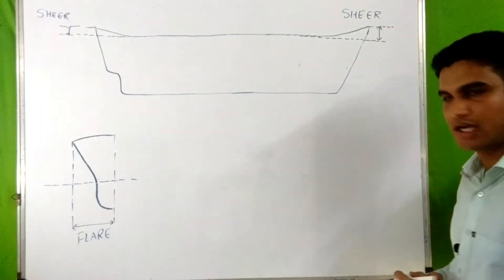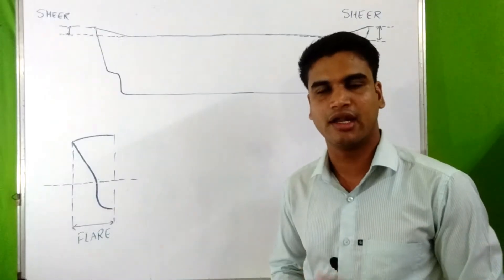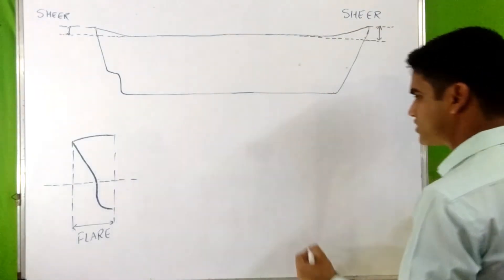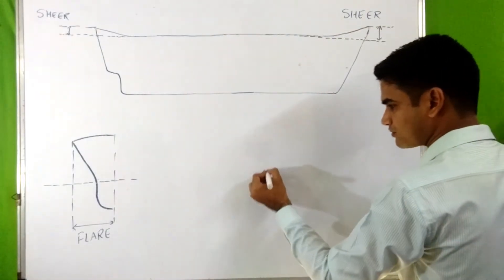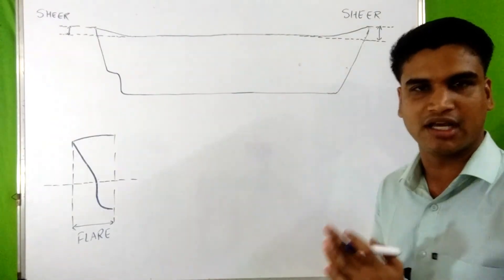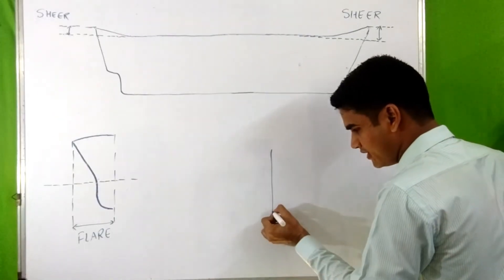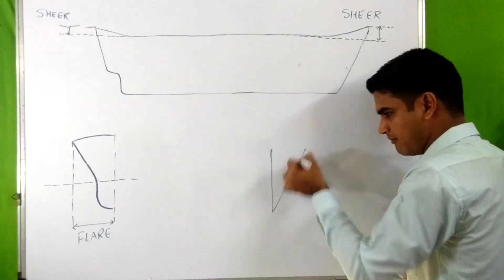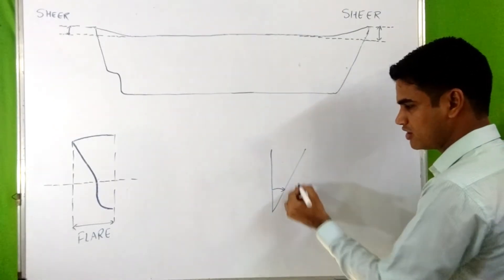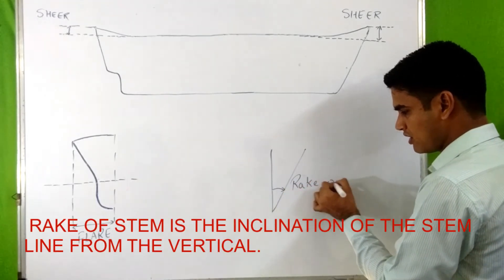Shear also drains water from the forecastle deck and the quarter deck. Next is rake. We have two terms in rake: rake of stem and rake of keel. Rake of stem means the inclination of the stem from a vertical line — this inclination is known as rake of stem.